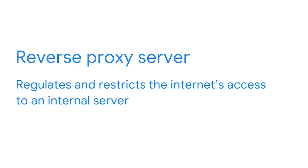In the context of an organization, a forward proxy server receives outgoing traffic from an employee, approves it, and then forwards it on to the destination on the Internet. A reverse proxy server regulates and restricts the Internet's access to an internal server. The goal is to accept traffic from external parties, approve it, and forward it to the internal servers. This setup is useful for protecting internal web servers containing confidential data from exposing their IP address to external parties.